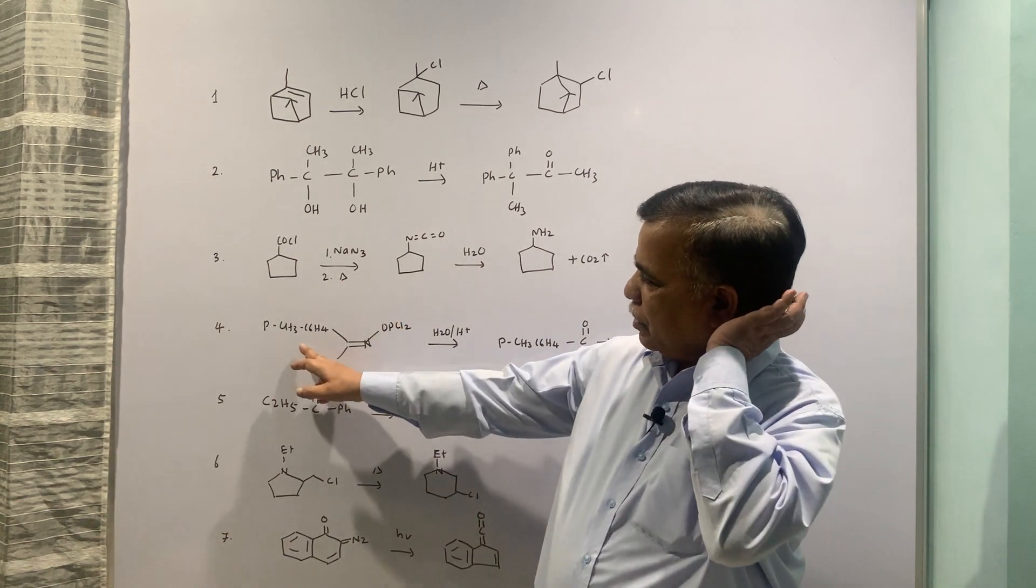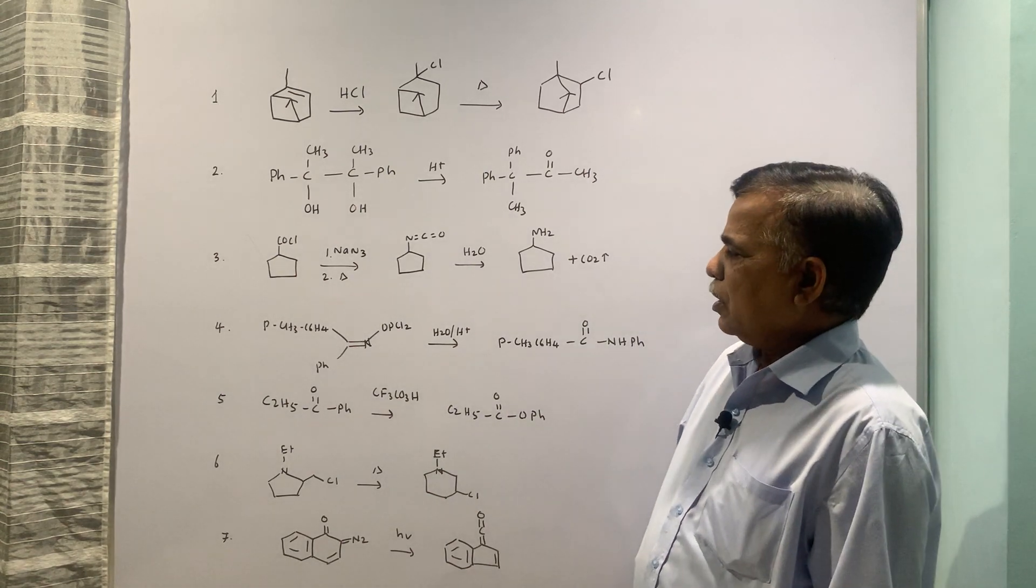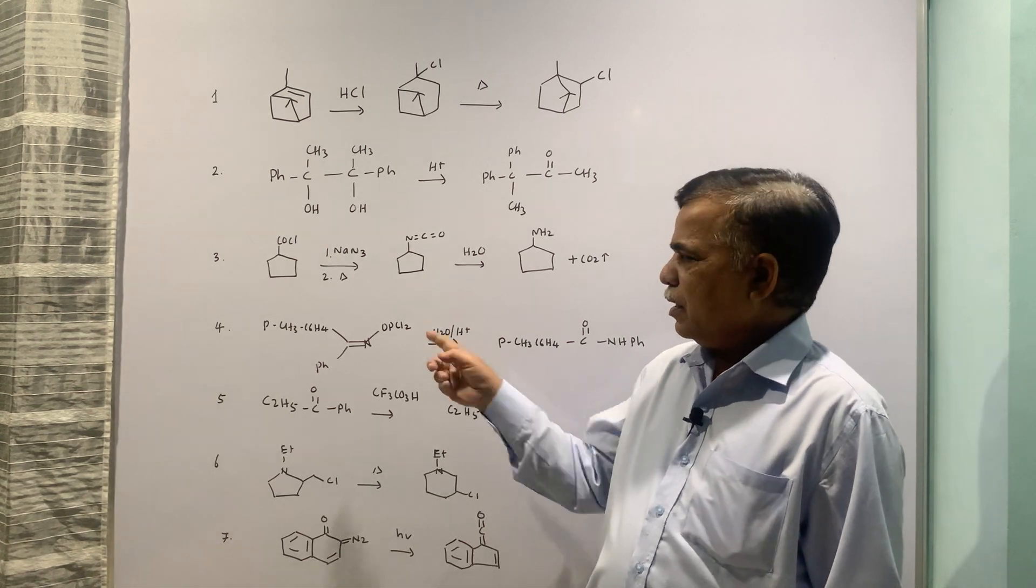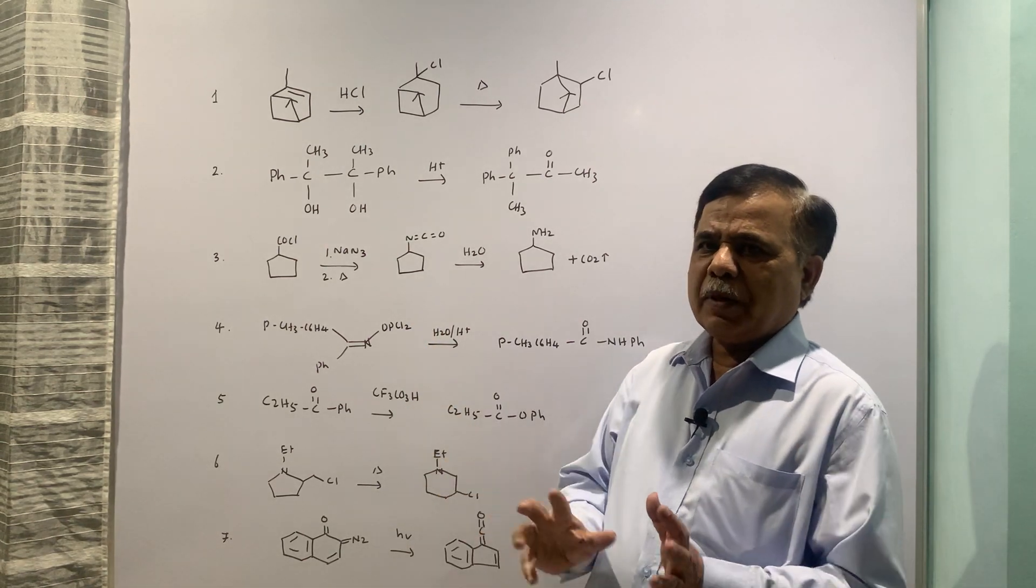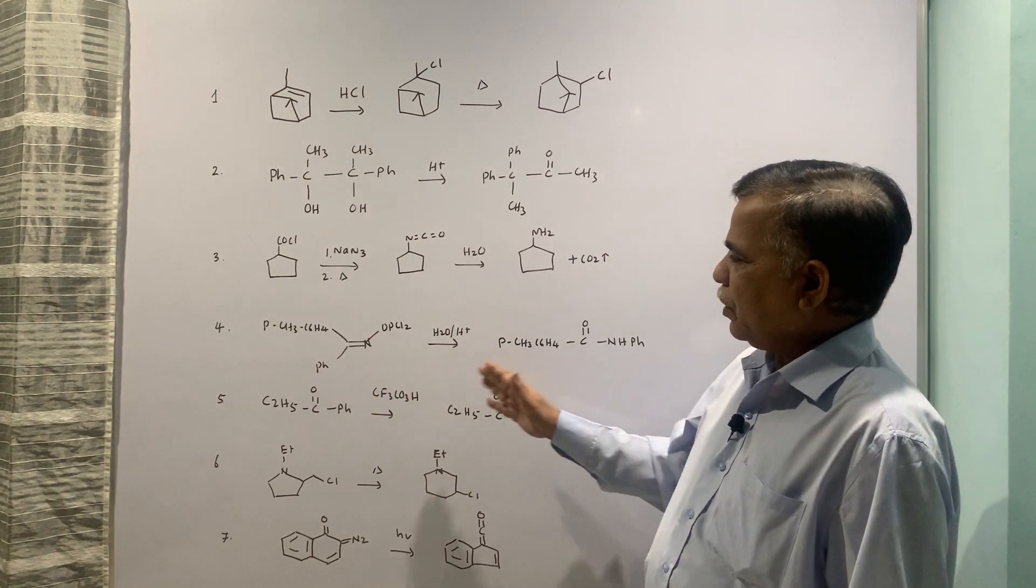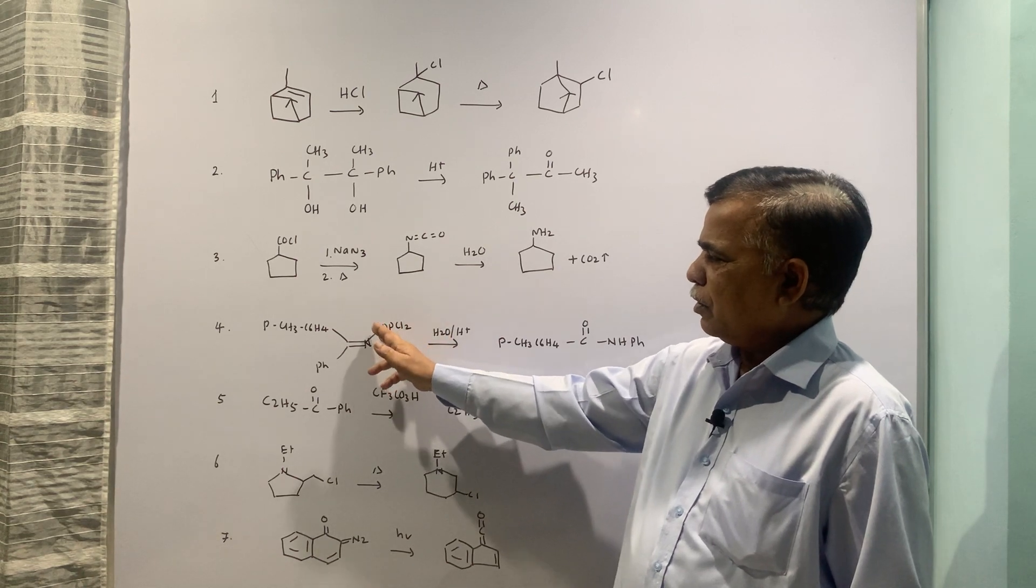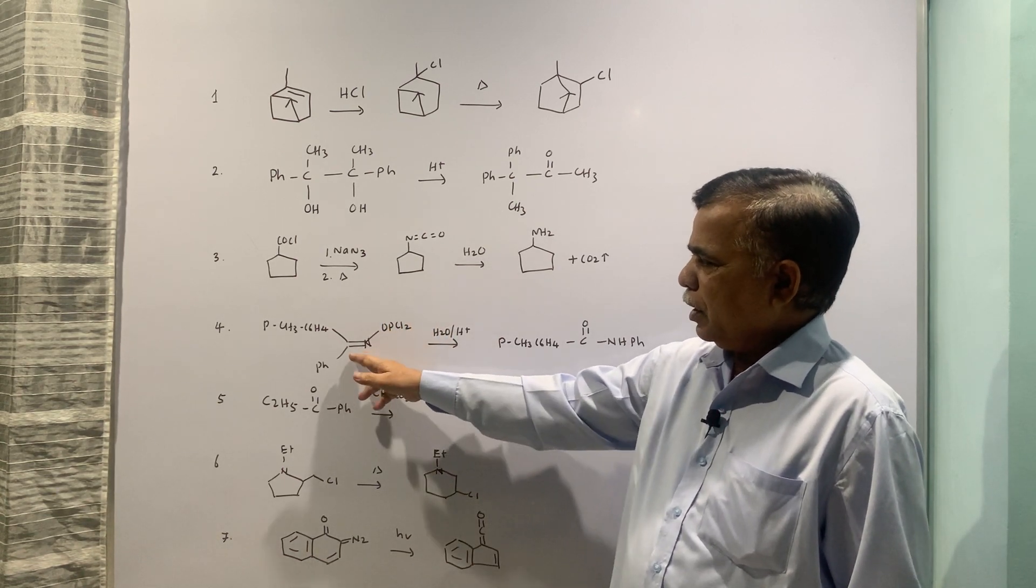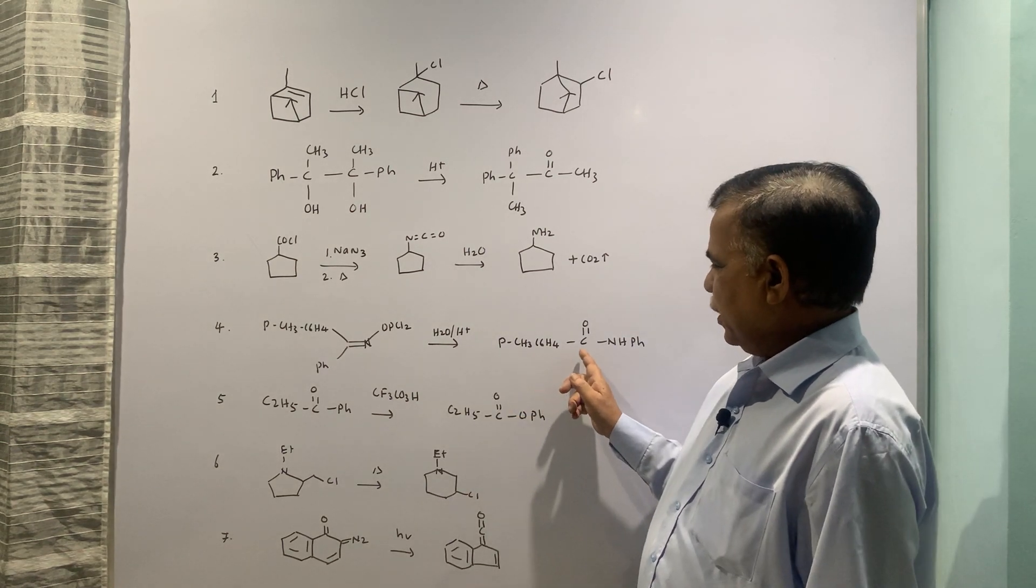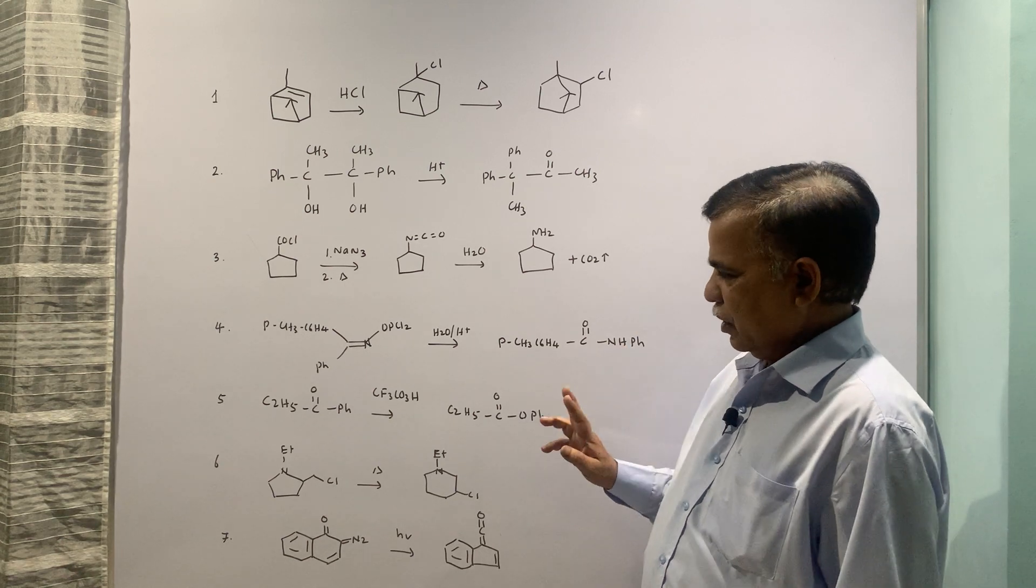Then this one is oxime wherein you are having two rings. One is phenyl and the other one is substituted at para position, and naturally this is the leaving group. The group anti to this has to migrate and therefore phenyl ring will migrate with the expulsion of this group.